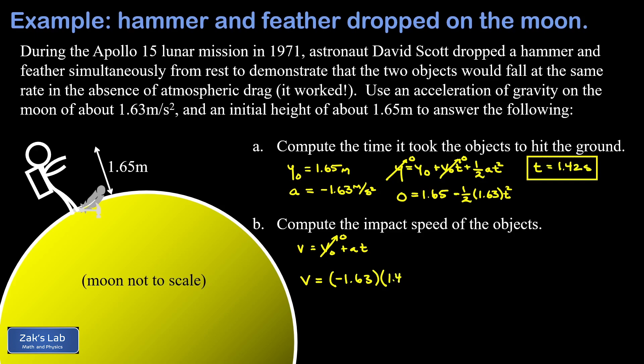times the fall time of about 1.42 seconds. This gives us a final velocity of negative 2.31 meters per second, keeping three sig figs in the calculation.